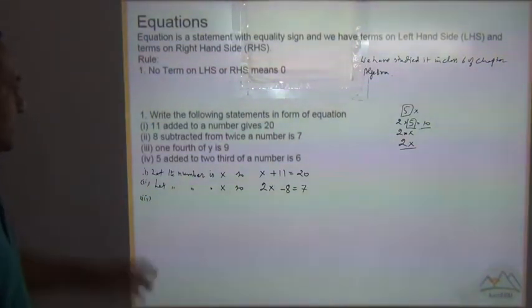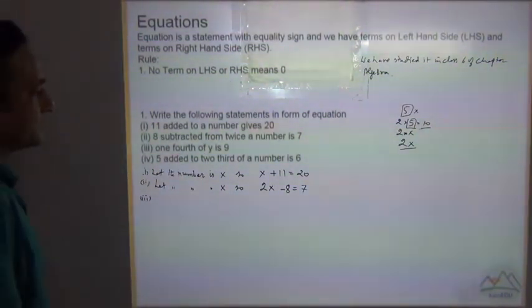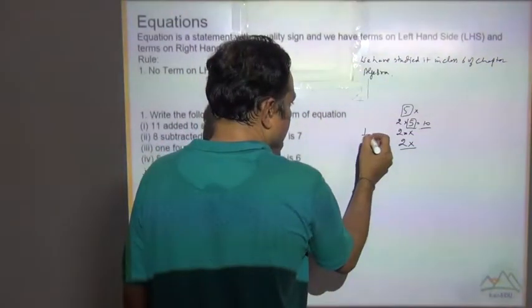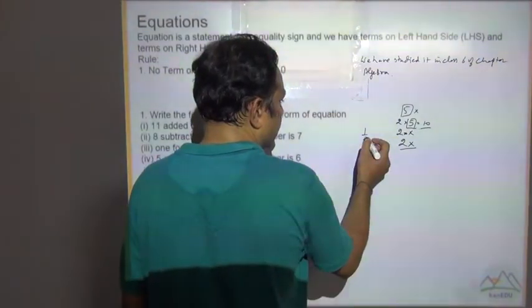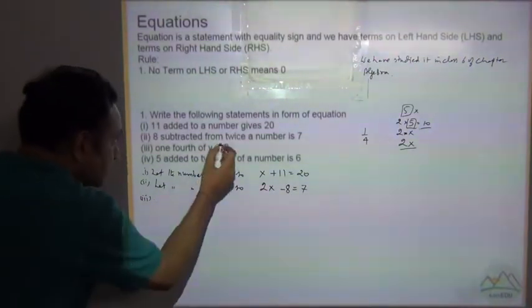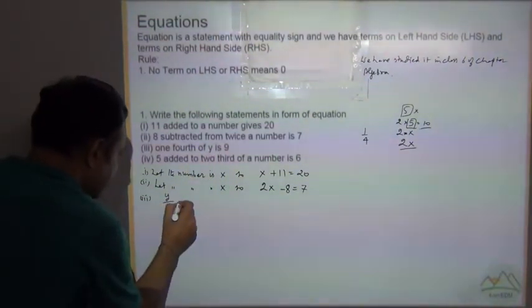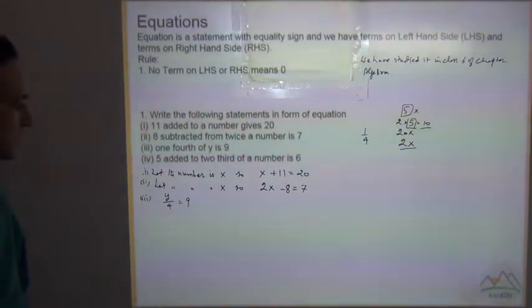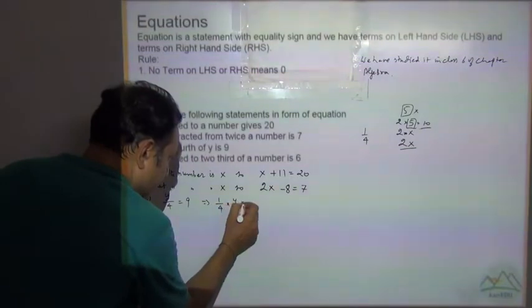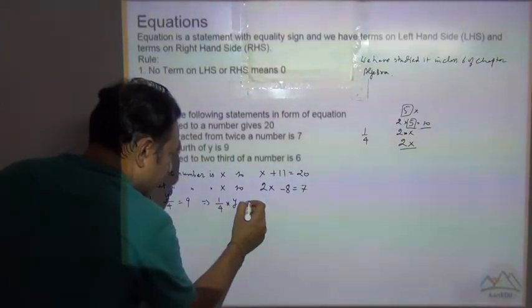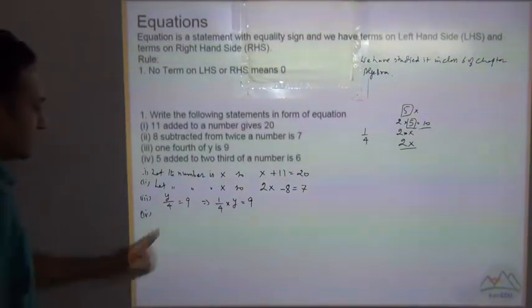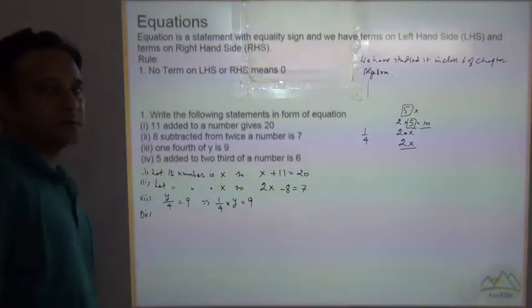Now third is, 1 fourth of a number is 9. What is 1 fourth? 1 fourth is this. 1 fourth of a number, it means a number is divided by 4. So it means y divided by 4 is equal to 9, or you can also write it as 1 by 4 of a number, it means multiply by y is equal to 9. These both equations are same.